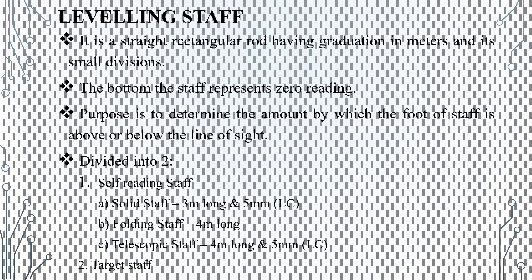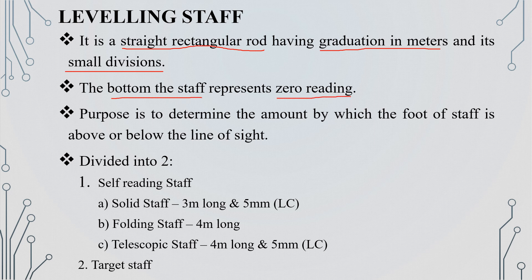The next one is the leveling staff. The leveling staff is a rectangular rod with graduations. There are small divisions marked on it. There are various types of leveling staff. The first one is the self-reading staff. The second one is the target staff.